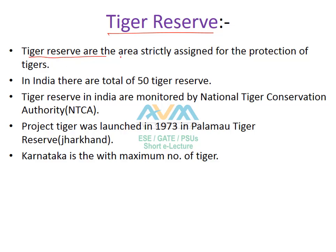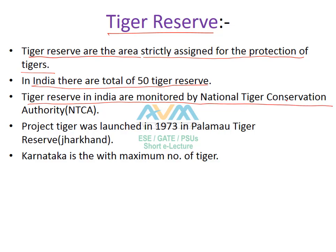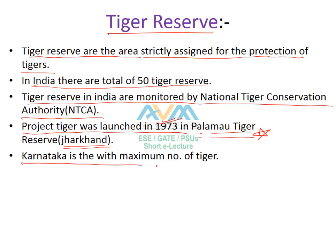Tiger reserves are protected areas strictly designated for the conservation of tigers. India has a total of 50 tiger reserves, and all monitoring and working of tiger reserves is overseen by the NTCA — the National Tiger Conservation Authority. Project Tiger was launched in 1973 in the Palamu Tiger Reserve, situated in the state of Jharkhand. It is important to note the launch year of Project Tiger, the location of Palamu Tiger Reserve, and that Karnataka is the state with the maximum number of tigers.